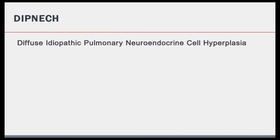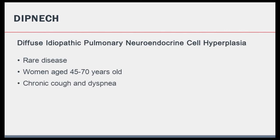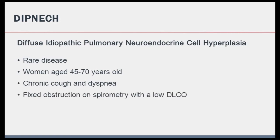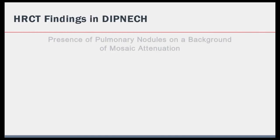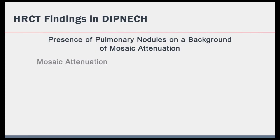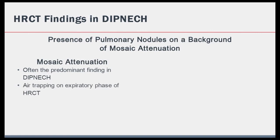Diffuse idiopathic pulmonary neuroendocrine cell hyperplasia is a very rare disease which predominantly occurs in women aged 45 to 70 years old. The symptoms are usually chronic cough and dyspnea, and these are often ongoing for years prior to diagnosis. Patients have a fixed airflow obstruction on spirometry and often have a reduced diffusion capacity for carbon monoxide. The distinctive CT findings are the presence of pulmonary nodules on a background of mosaic attenuation. Mosaic attenuation is often the predominant finding, with air trapping evident on the expiratory phase of high-resolution CT thorax, and this can occasionally be significant enough to see on the inspiratory phase.